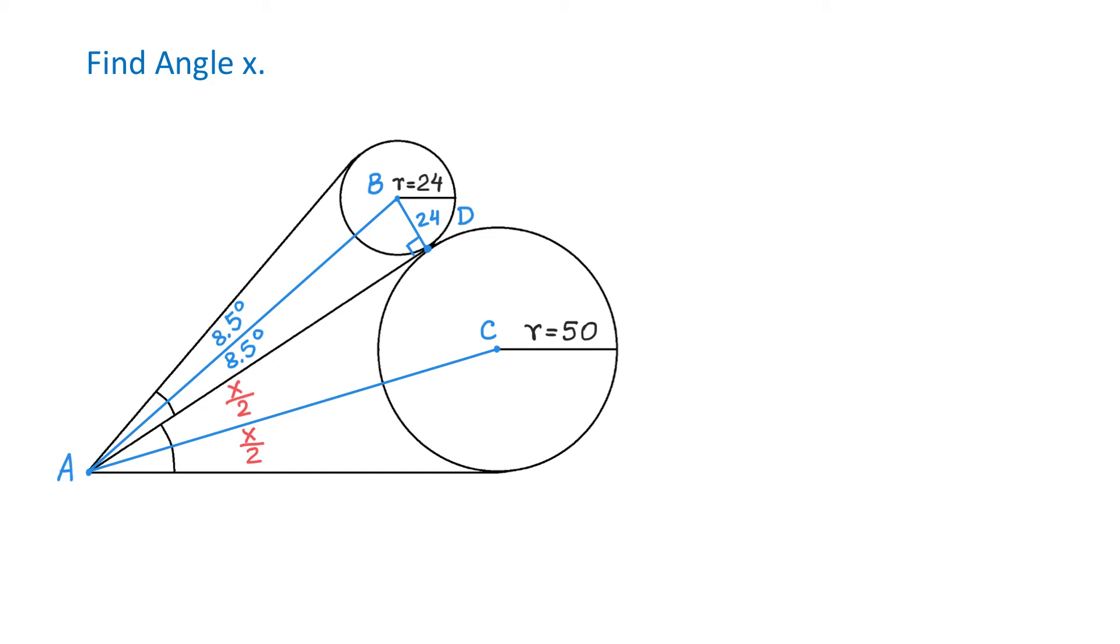In this triangle, the acute angle A measures 8.5 degrees. The opposite side is 24 units and we can find the adjacent side AD using the tangent function. We will write that tangent of 8.5 degrees equals the opposite side 24 divided by the adjacent side AD.